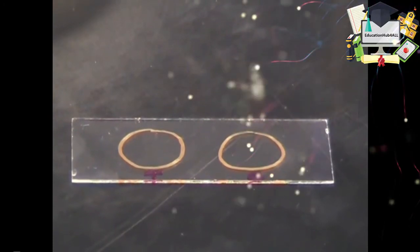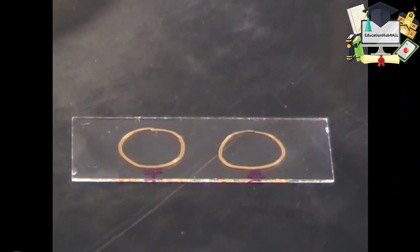On a slide, draw two wax pencil circles. Label one test and one control.